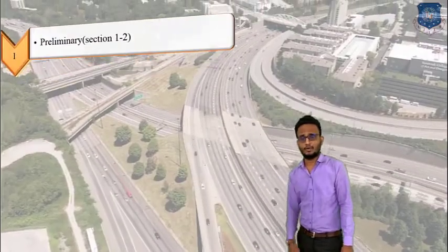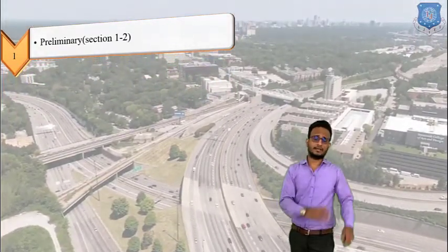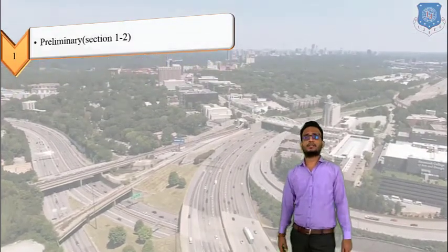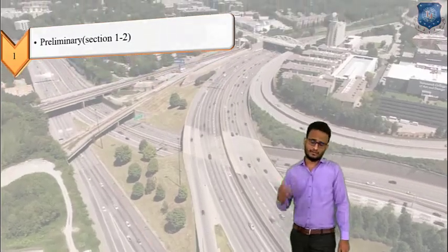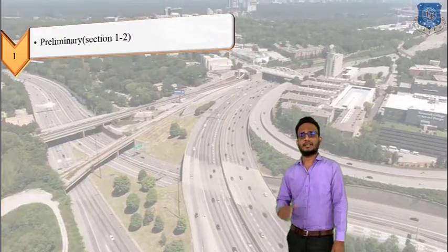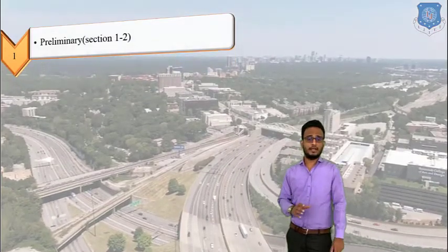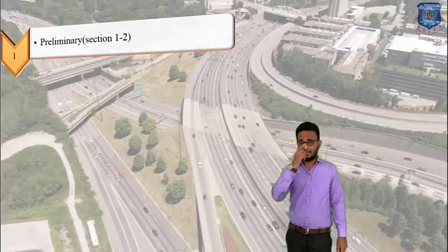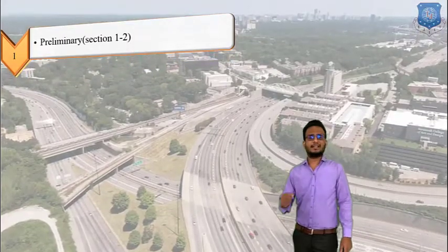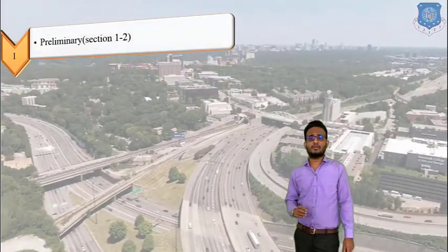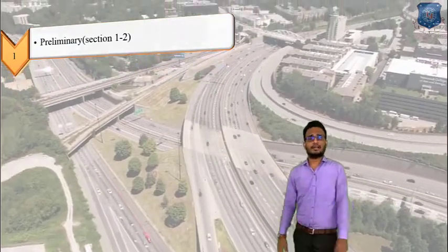Let us discuss all the parameters of the Motor Vehicle Act. I will give you a detailed analysis chapter-wise and section-wise. Chapter number 1 belongs to preliminary sections as well as definitions. The Motor Vehicle Act has 217 sections and 14 chapters. Chapter number 1 contains section 1 and section 2.